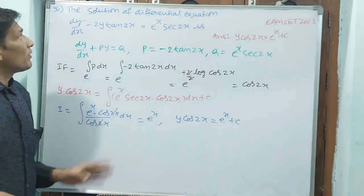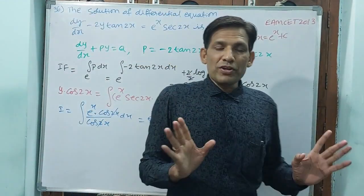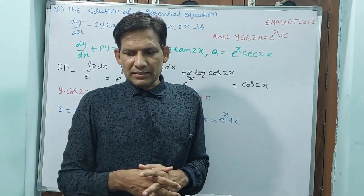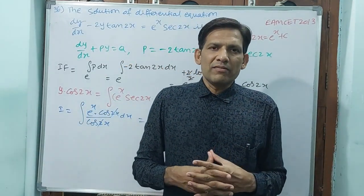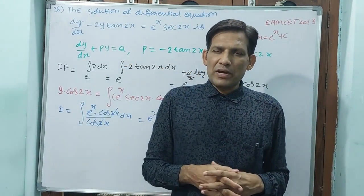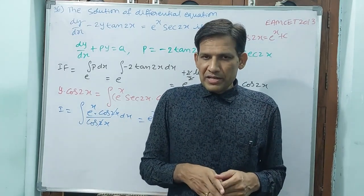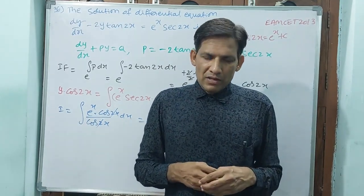Y cos 2x equals e power x plus C. We have finished up to question number 36. Another 4 questions are there from 37 to 40. We are going to finish those in the next class and complete this chapter. Thank you very much.